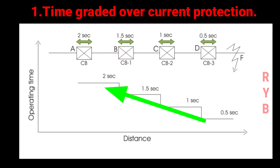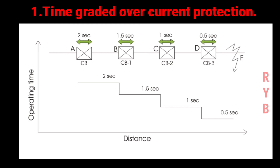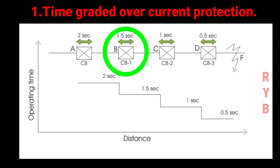Now assume a fault occurs at point F. Due to this fault, fault current flows through all the current transformers connected in the line. Since the relay at point D has the minimum time setting, circuit breaker CB3 will trip first to isolate the fault zone. If CB3 fails to trip, the next relay with a higher time setting will operate and circuit breaker CB2 will trip. If CB2 also fails, circuit breaker CB1 will trip to isolate a major portion of the line.